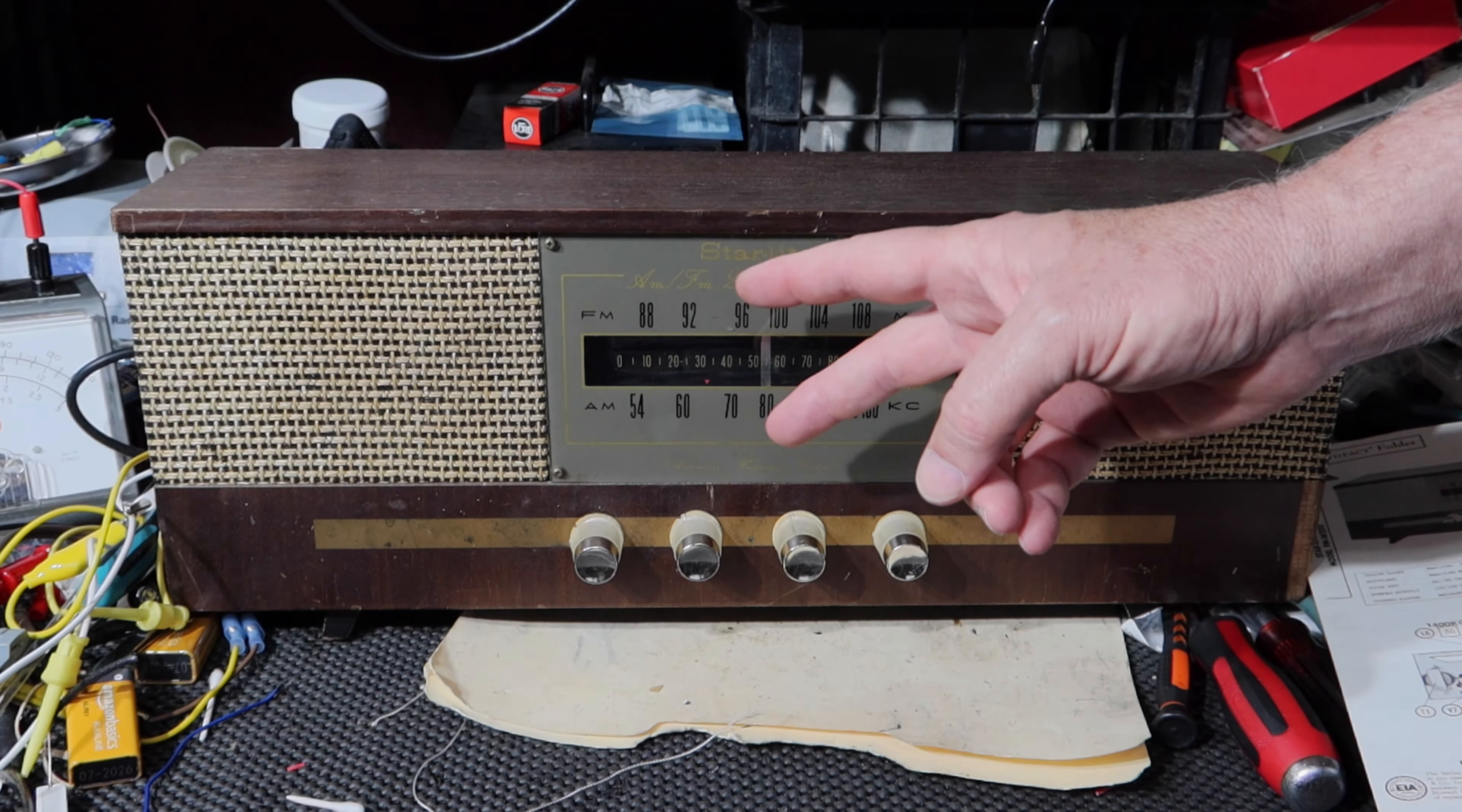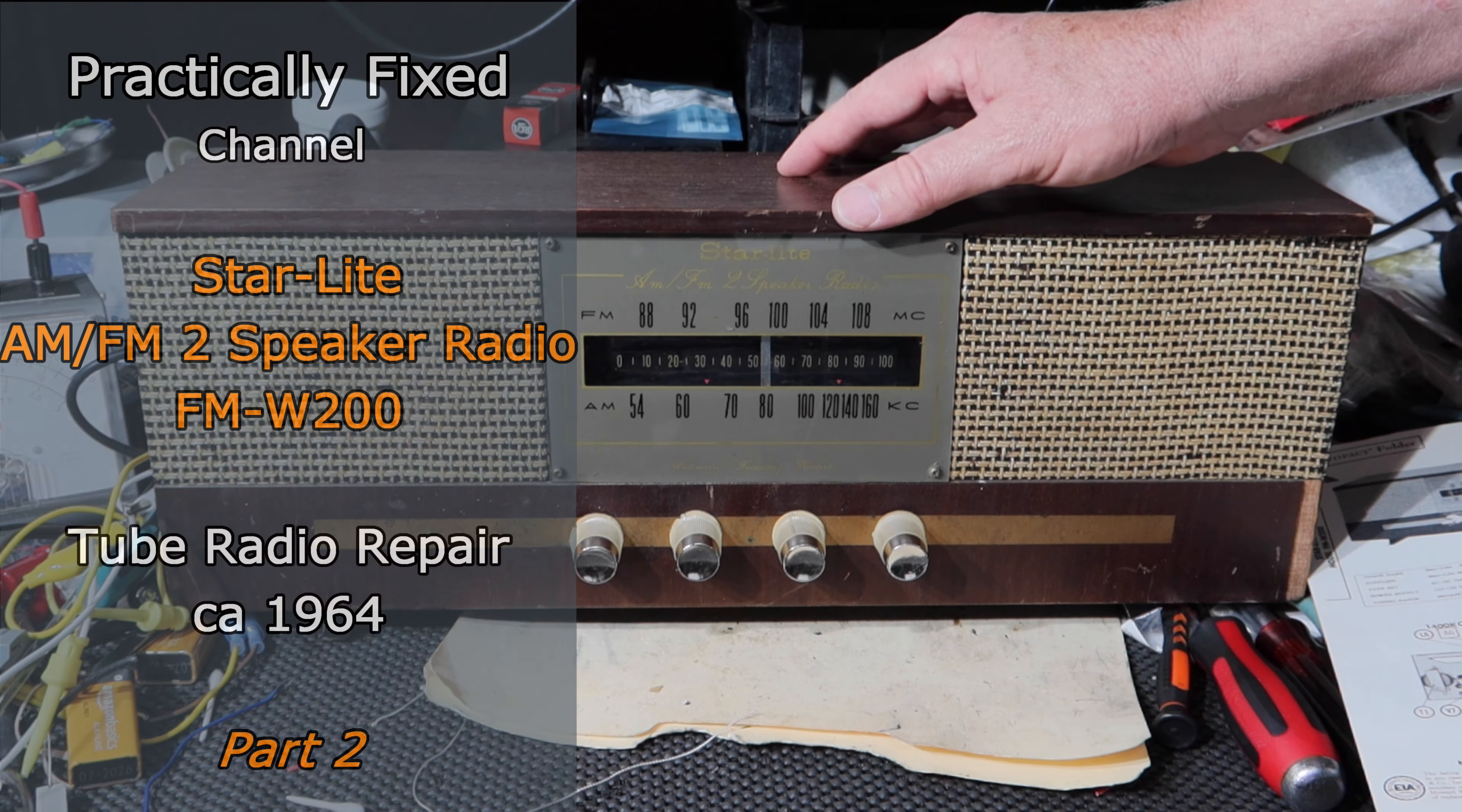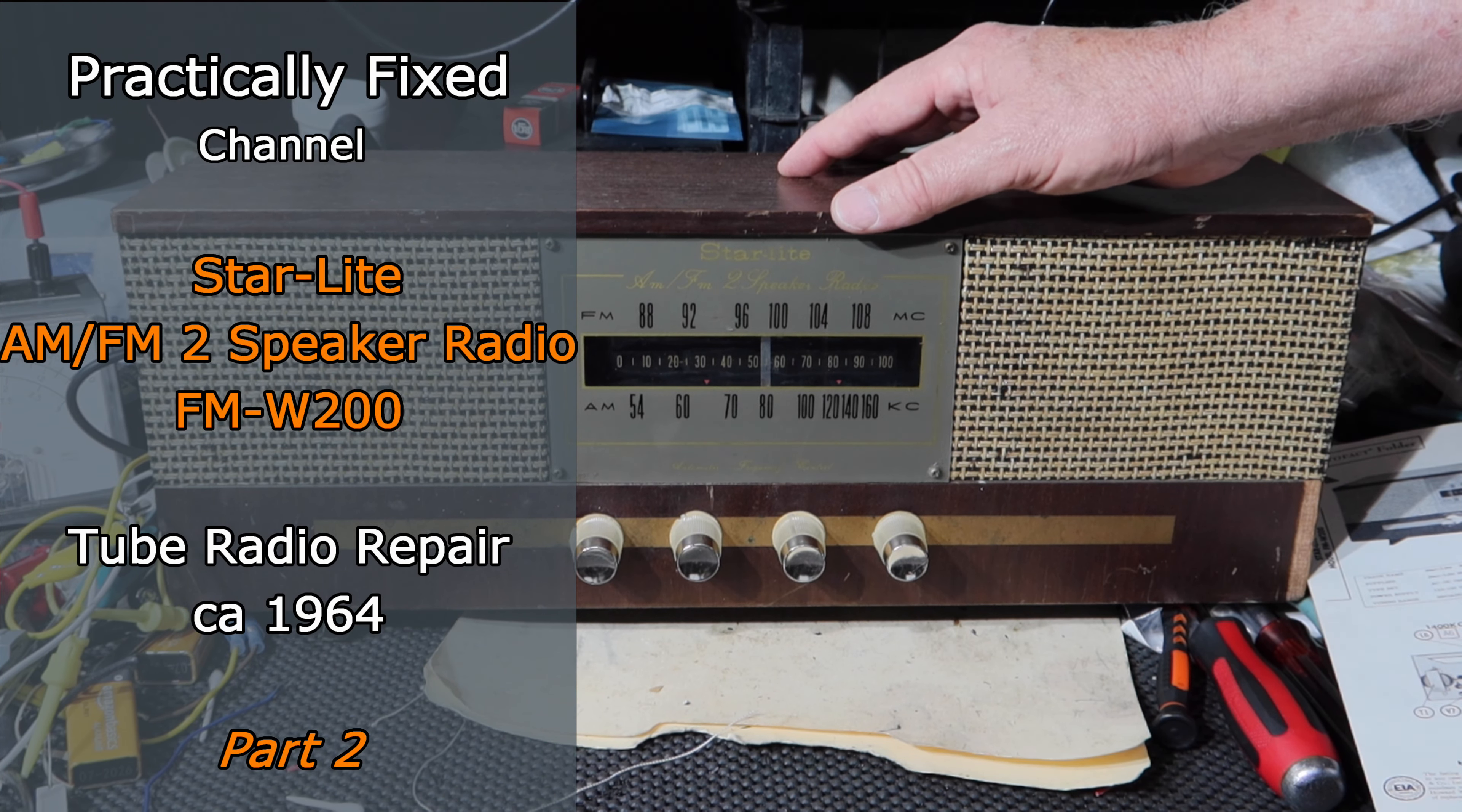Hey guys, welcome back. This is part two of this Starlight tube radio repair that we've been working on. This thing's from 1964. It's a model number FMW200.